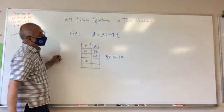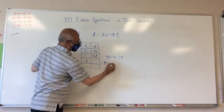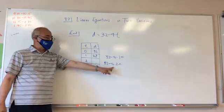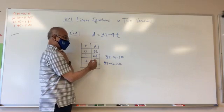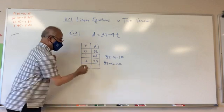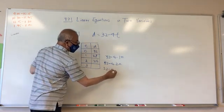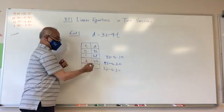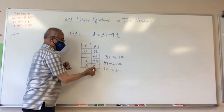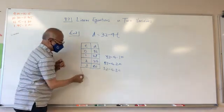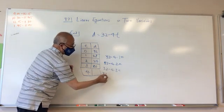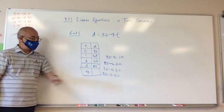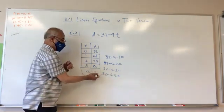When t equals two, I get 32 minus 4 times two — that's 32 minus 8, which is 24. When t equals three, I get 32 minus 4 times three — that's 32 minus 12, which is 20. Let's do one more. When t equals four, I get 32 minus 4 times four. Four times four is 16, so 32 minus 16 is also 16.